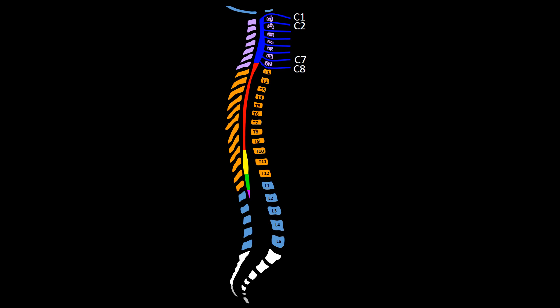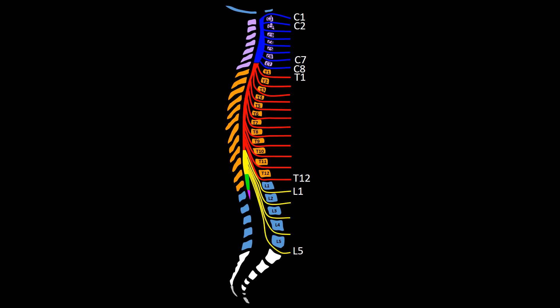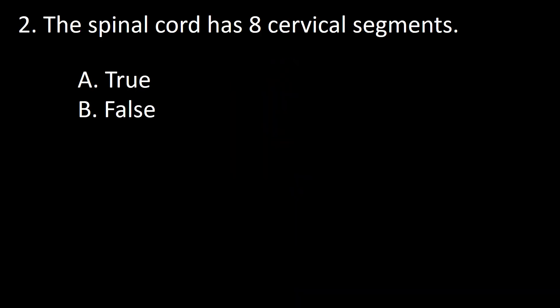C8 spinal nerve exits below the C7 vertebra. From then on, all thoracic spinal nerves (T1 to T12), all lumbar spinal nerves (L1 to L5), all sacral spinal nerves (S1 to S5), and even the coccygeal nerve exit the spinal cord below the corresponding numbered vertebra. So the answer to this question is true.